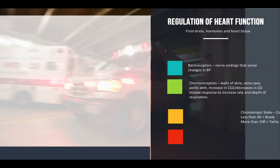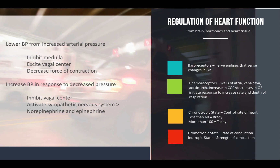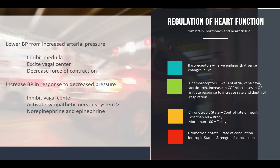One thing I want to mention is regulation of heart function. It comes from the brain — the autonomic part of it — and from hormones, and from the heart tissue itself. We talk about things like baroreceptors — those sensory nerve endings that sense changes in blood pressure from vasodilation to vasoconstriction. It lowers blood pressure in response to increased arterial pressure, inhibits the medulla, excites the vagal center, and decreases the force of contraction of the heart as well.